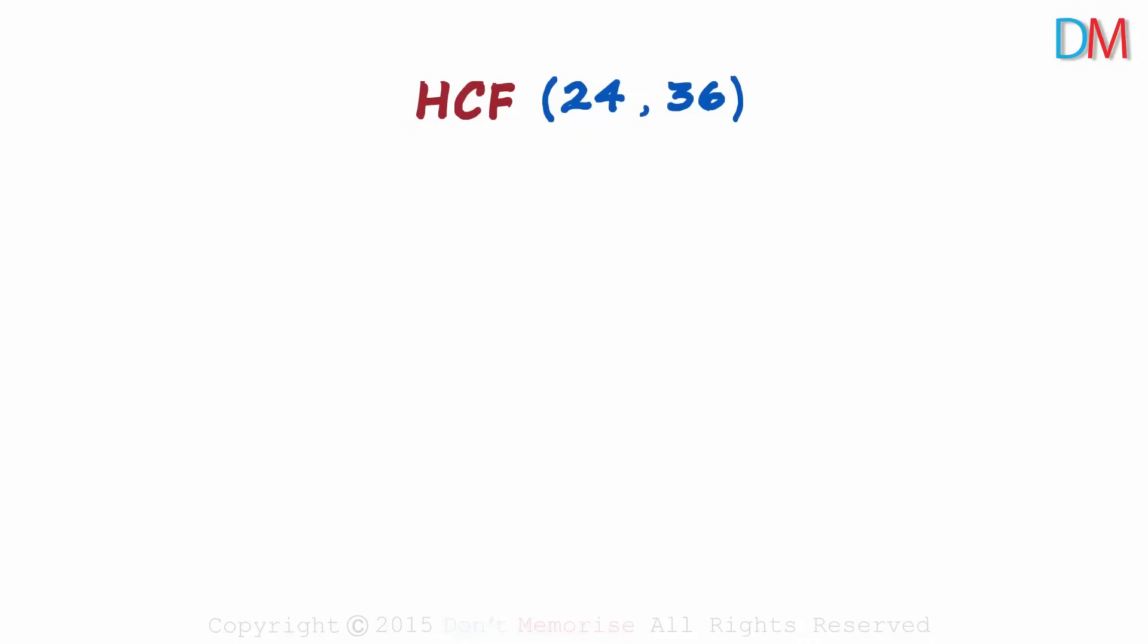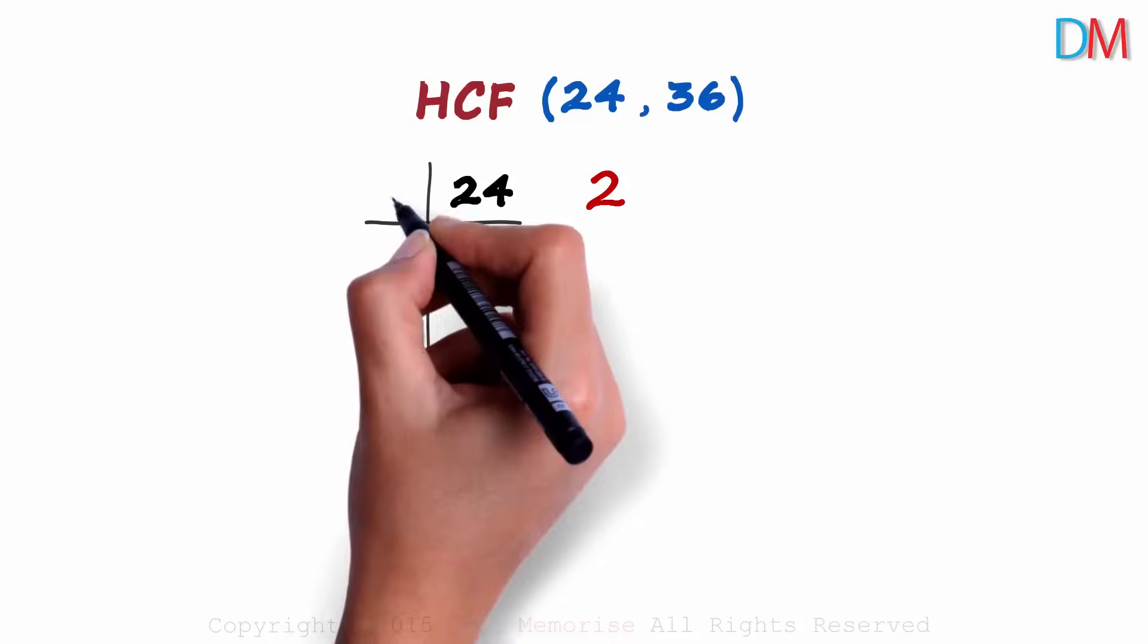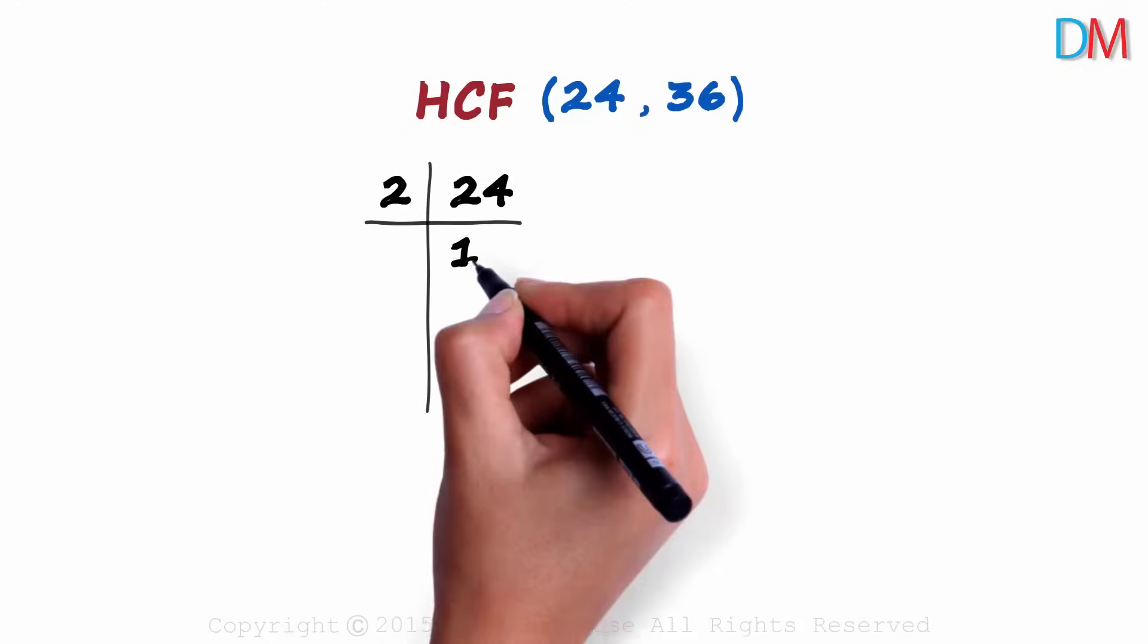First, let's find the prime factors of 24. We draw two lines like these. Now we think of all the prime factors that 24 is divisible by. We start with 2. 24 is divisible by 2, so we write a 2 here. 2 times 12 is 24.